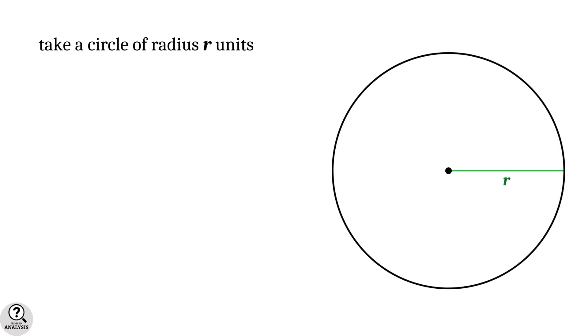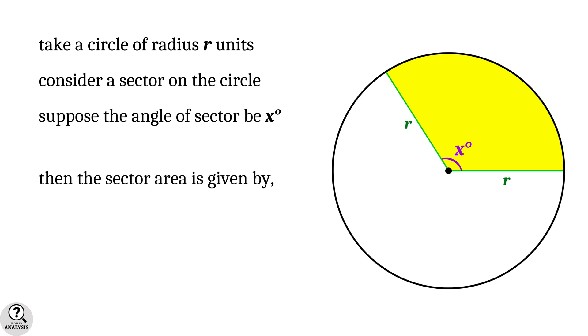So, suppose we have a circle of radius r units and consider an arbitrary sector. Suppose the angle of the sector is x degree. Then the sector area is calculated by the formula pi r square into x by 360.